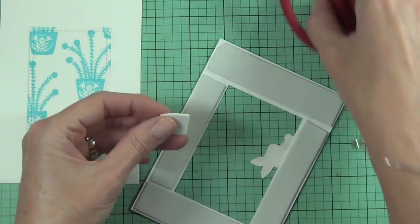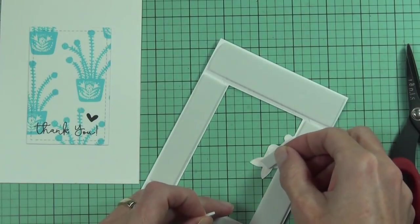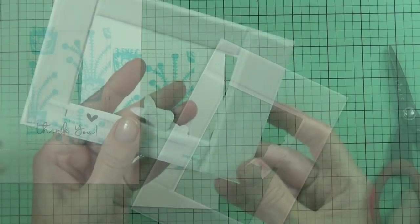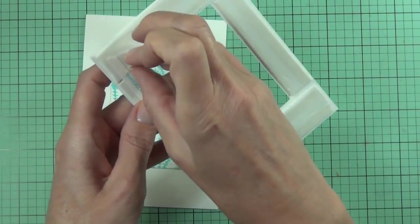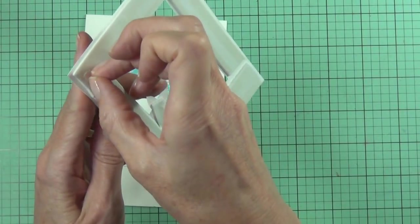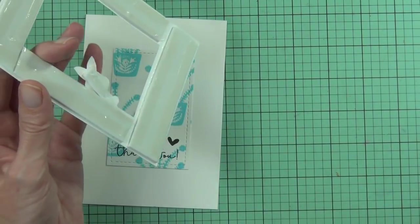And then also behind the bunny, because I want to make sure that doesn't get bent over in the post as well. And then all I did was add some score tape to the back of the fun foam, and that way I know that it's all going to hold nice and strong on the card front. And that's my finished card for today!